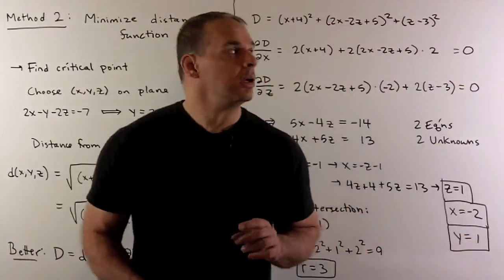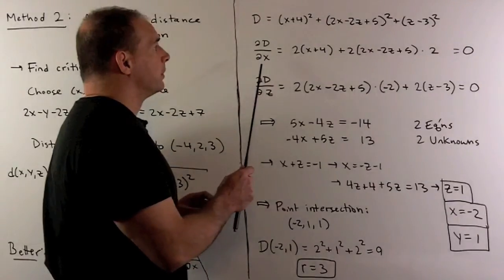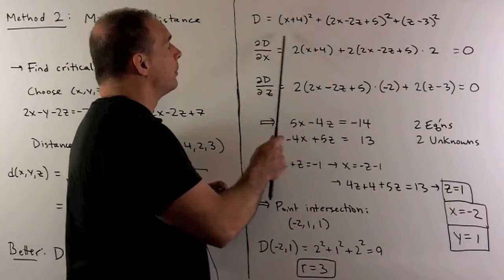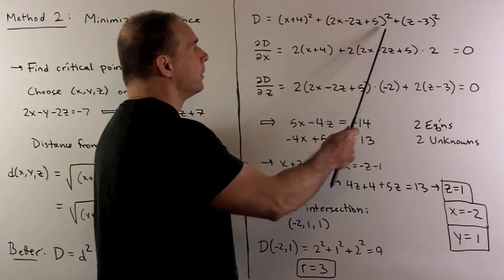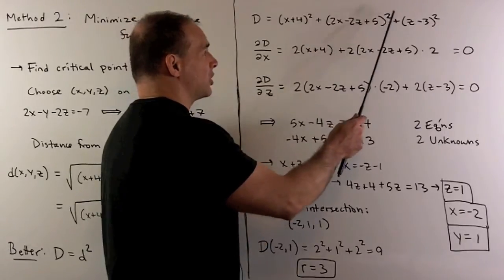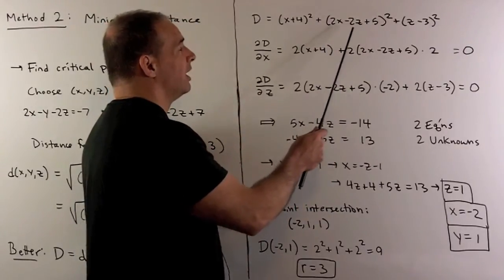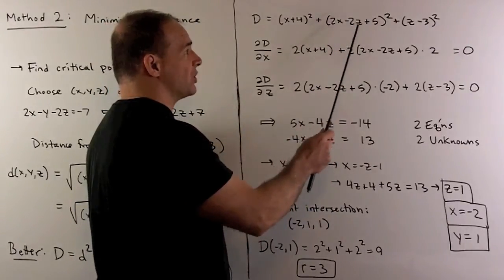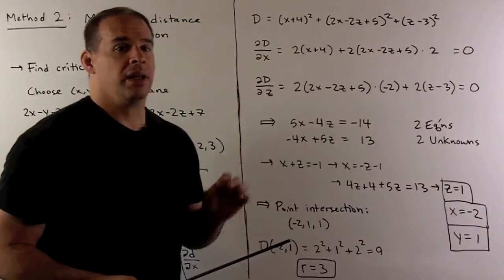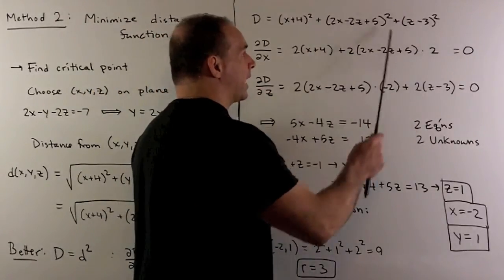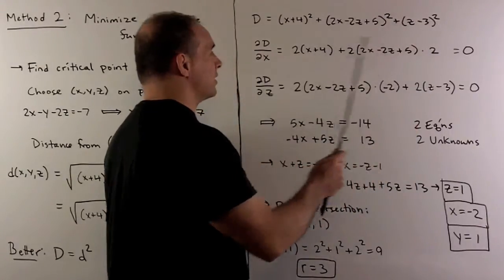Now, we have our capital D. Take the partial with respect to x. So term by term, first term has only x's in it. So we take the derivative as normal. Middle term, we use a chain rule. Two comes down, exponent goes to one. Derivative of the inside with respect to x. We get a two. The z I treat as a constant. So it goes to zero. Five goes to zero. So we're only going to factor two on the outside. Then for the z minus three squared, there's no x here. So we treat it as a constant. So that goes to zero also. We set this equal to zero.